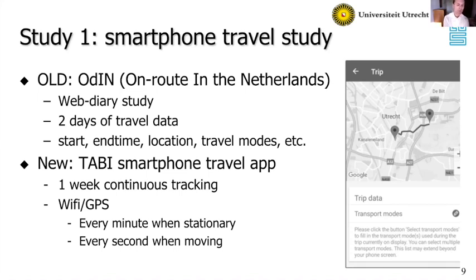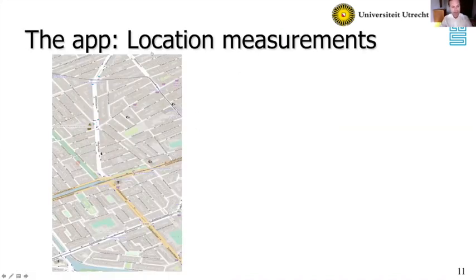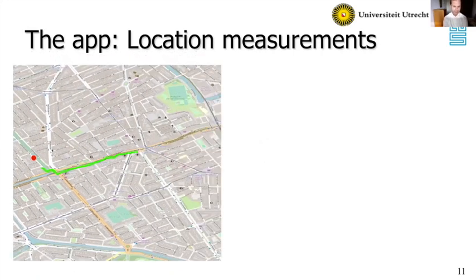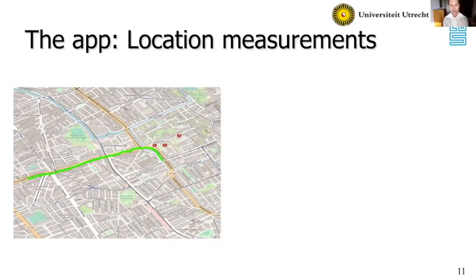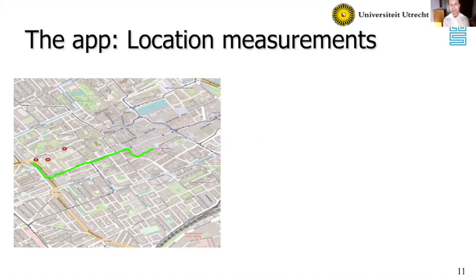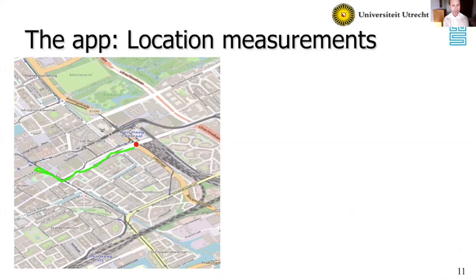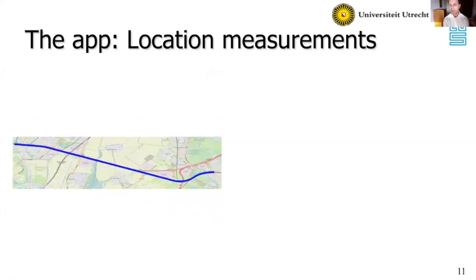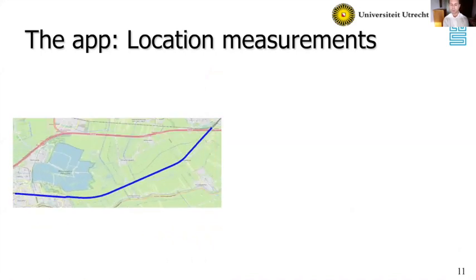Two years ago we did a big field test to see whether a smartphone travel app could replace this study. We called the new app TABI, a Japanese word for travel. The idea was to follow people with their smartphones and track them using Wi-Fi and GPS sensors — their location every minute when stationary and every second when moving. Here I'm showing part of a map of The Hague, showing a trip someone took traveling from The Hague to Utrecht. GPS data are not perfect — there are problems with precision and sometimes gaps due to technological issues.